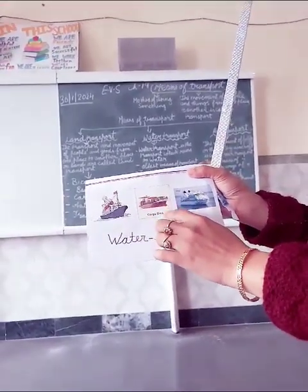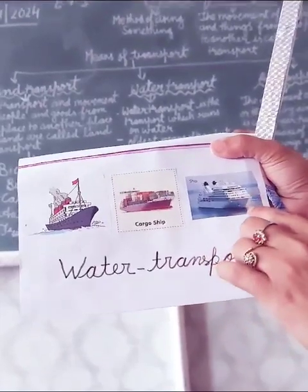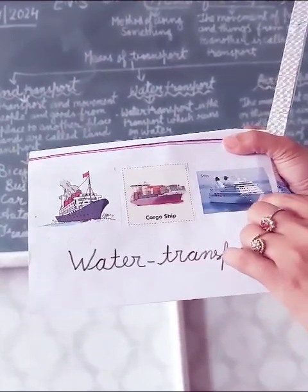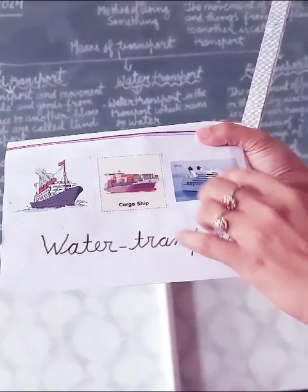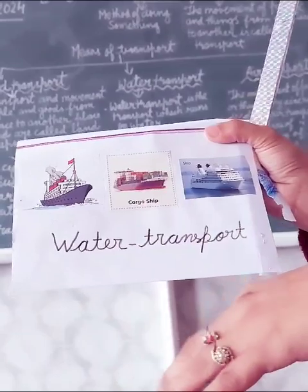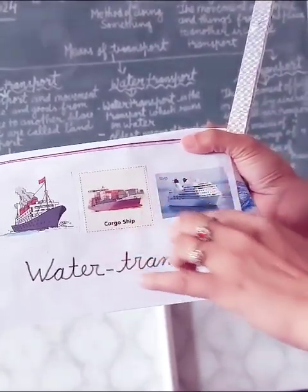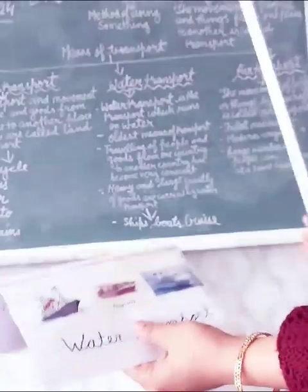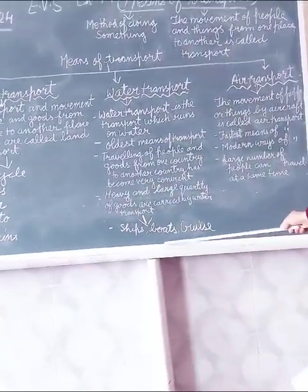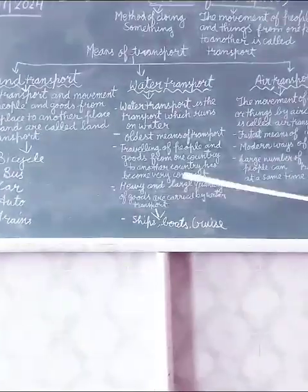These ships are used for sending goods from one country to another country. These are cruises — when we travel from one country to another country, or within our country in a domestic way, we use cruises. And ships and boats — these are the examples of water transport.